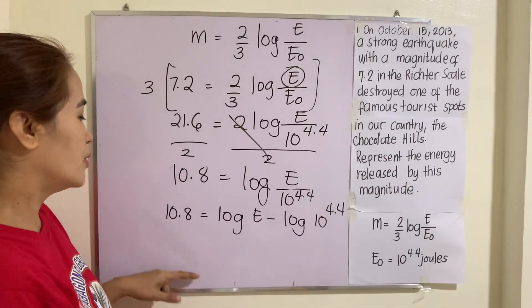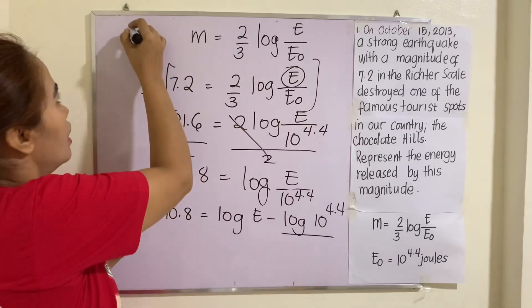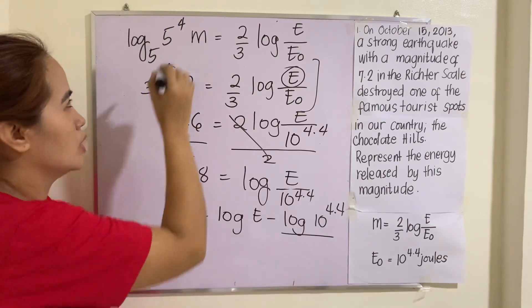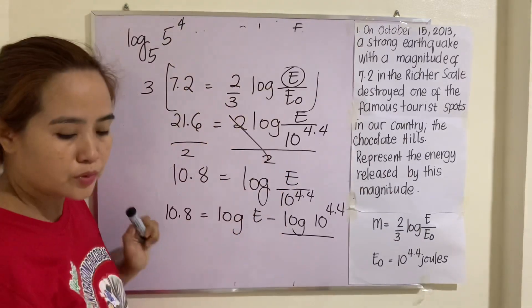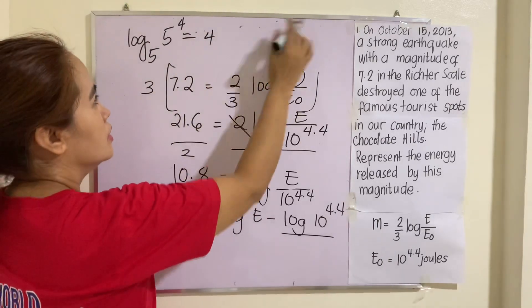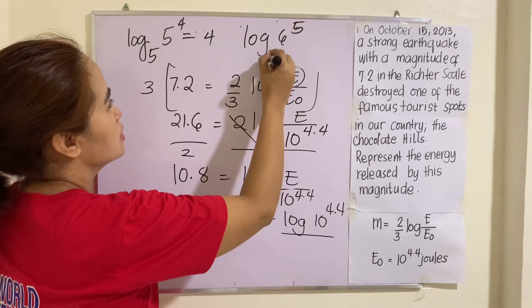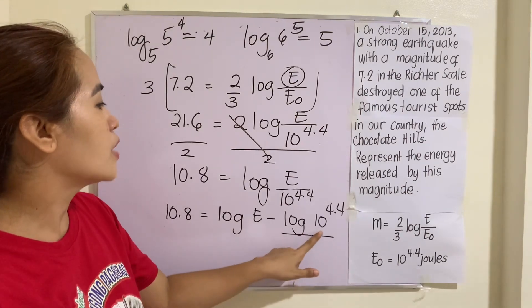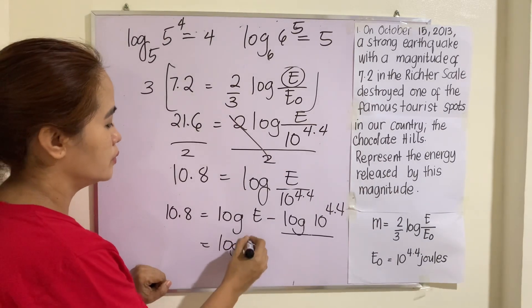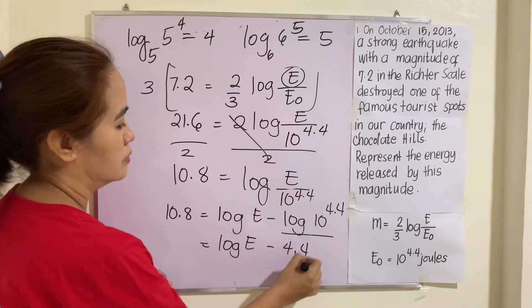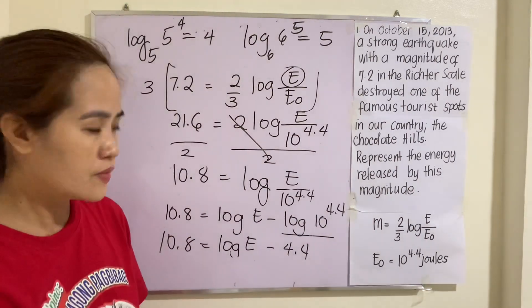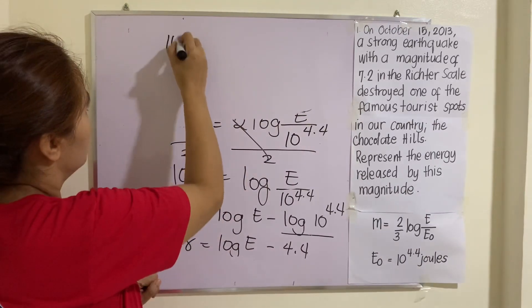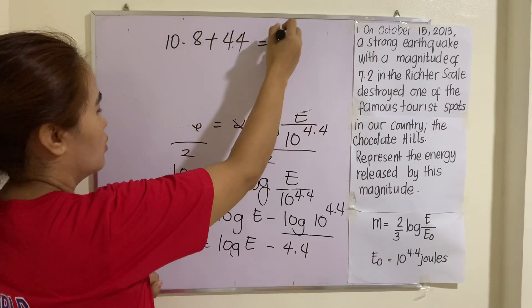So now. There is a law in logarithm that if you have log_5(5^4). This one is equal to 4. Another. If you have log_6(6^5) to the base 6 is equal to 5. So applying that law, that will be log(10^4.4) = 4.4. Solving for this, this will be equal to 10.8 + 4.4 = log E.